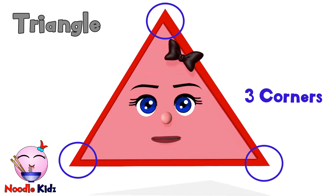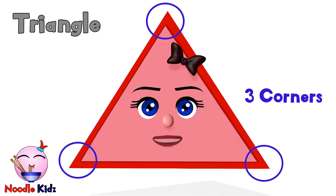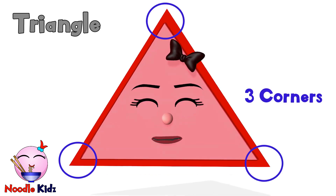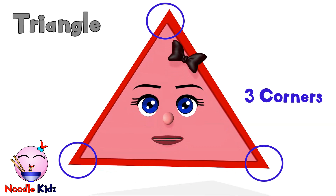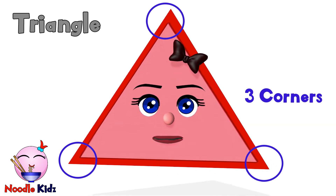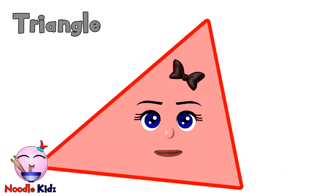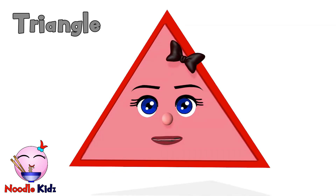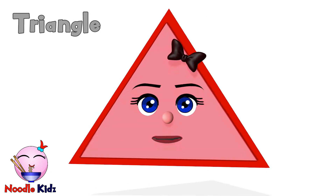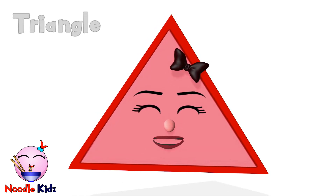And I have 3 corners as well: 1 corner, 2 corners, 3 corners. I could look like this, or like this, or like this — and I'm still a triangle.